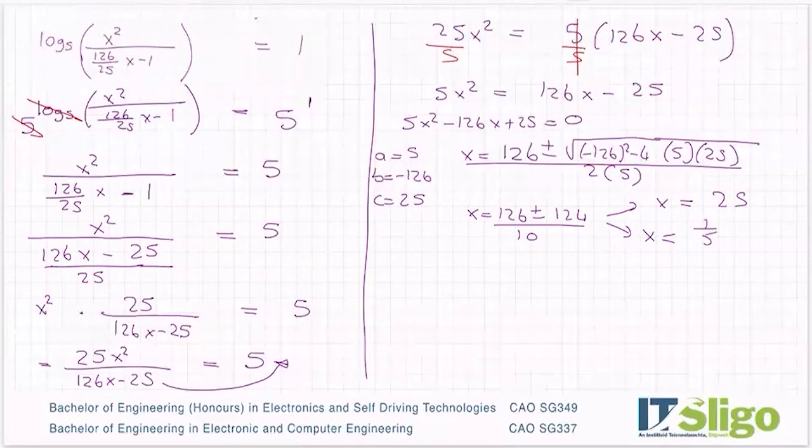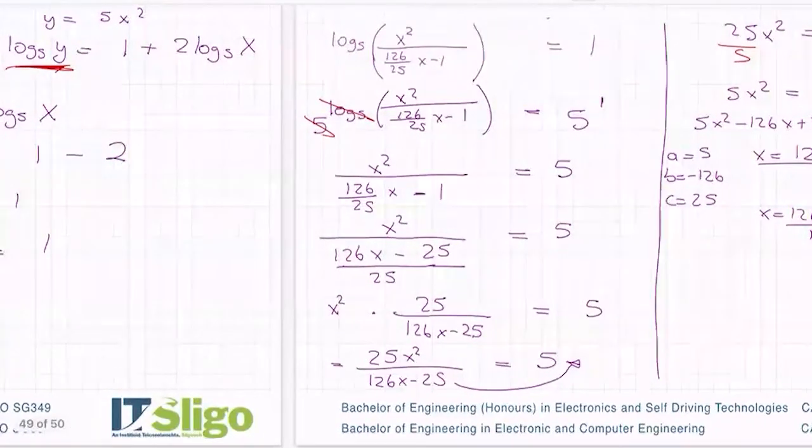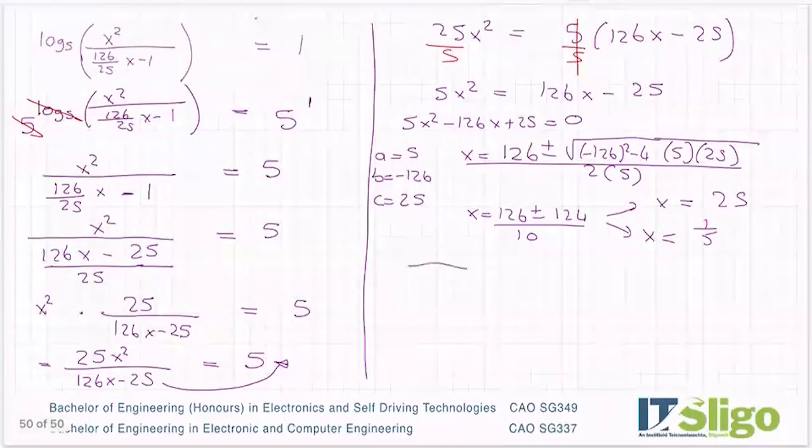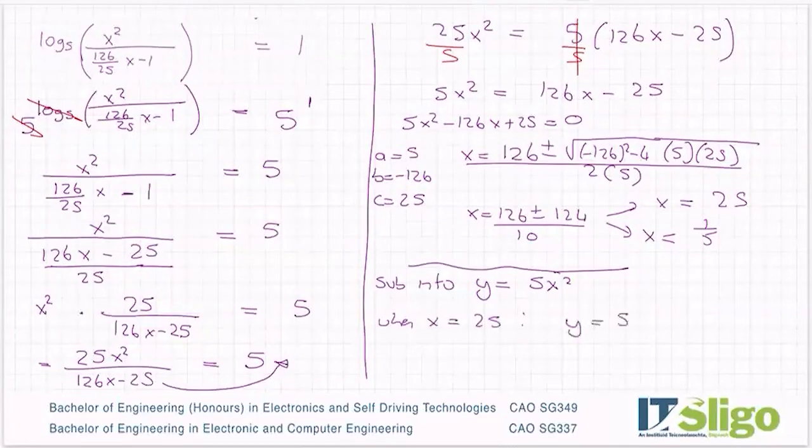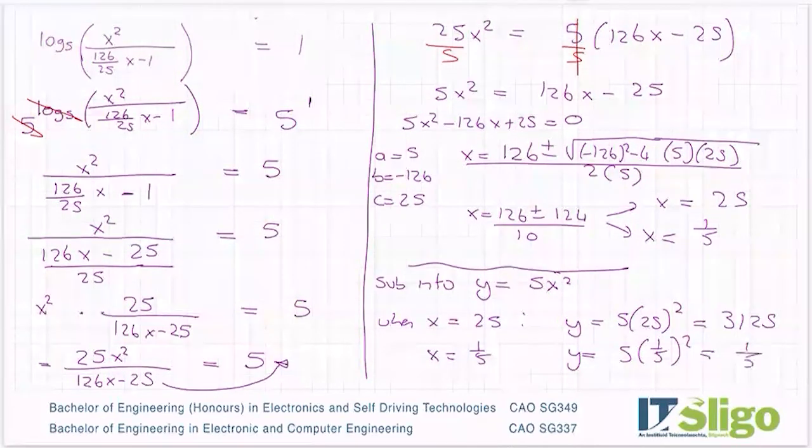So like I was saying, you could sub them into any equation you want. I'm going to use, sub into Y equals 5X squared because that to me is the easiest one. So when X is equal to 25, Y is equal to 5 times 25 squared. 5 by 25 squared is 3125. And when X is equal to a fifth, Y is equal to 5 times a fifth squared, and it's a fifth.